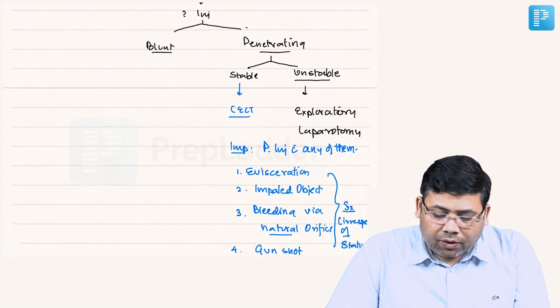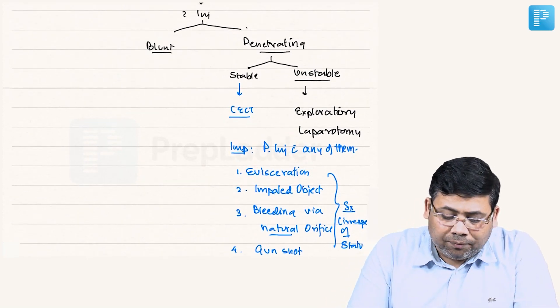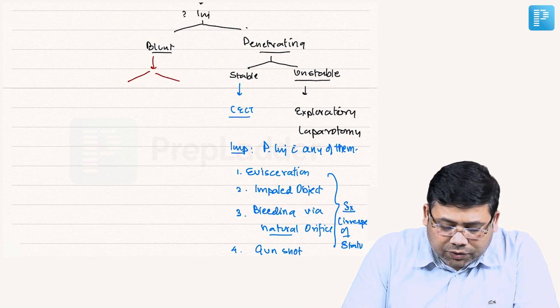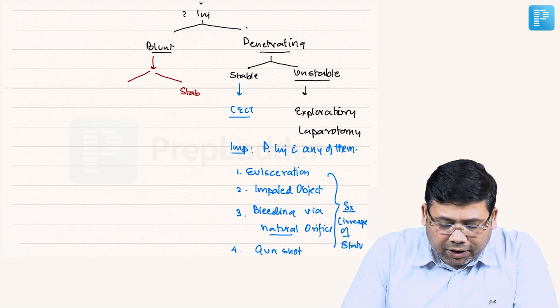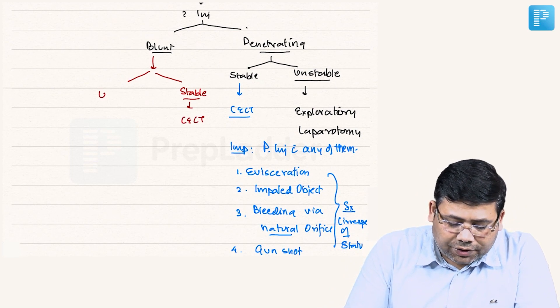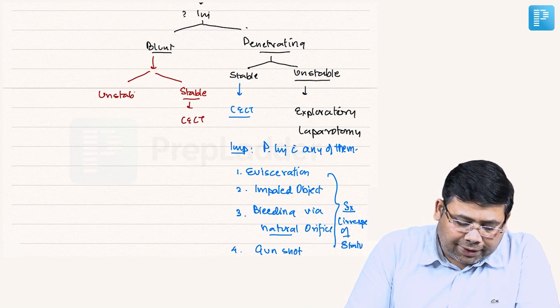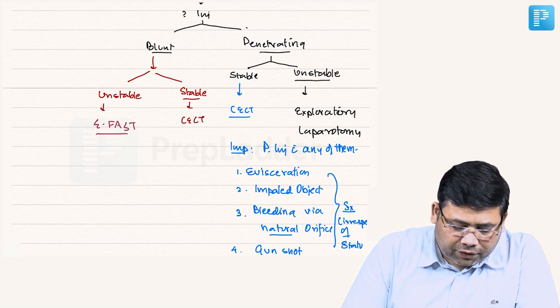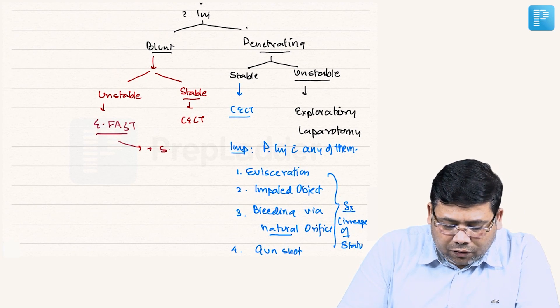Now on the other hand, if you had a blunt trauma patient, what to do? In this patient, again you need to check whether the patient is stable. If the patient is stable, go for CECT. If the patient is unstable, the next thing is we will go for eFAST. Remember, if eFAST is positive, you will go for surgery. If eFAST is negative, you will go for repeat eFAST.